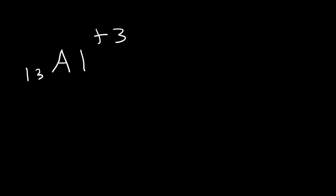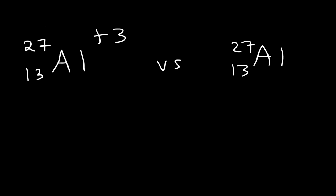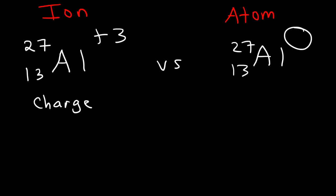Aluminum has an atomic number of 13 and a mass number of 27. Let's compare it to an atom of aluminum. On the left side we have the ion and on the right side the atom. As you can see, an ion has an electrical charge, while an atom is neutral — there is no charge. The question is why: why are atoms neutral but why do ions possess either a positive or a negative charge?